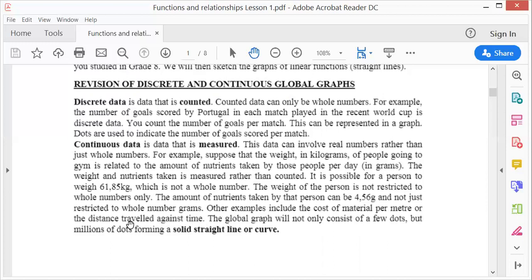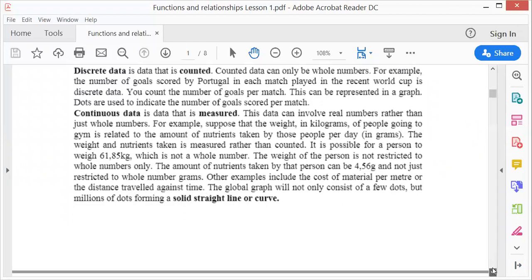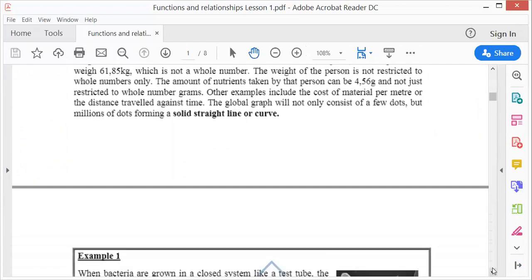Other examples include cost of materials per meter, distance traveled against time. The global graph will not only consist of a few dots but millions of dots, and all these millions of dots will form a solid straight line or sometimes a curve. Please make sure you see the difference between discrete and continuous.